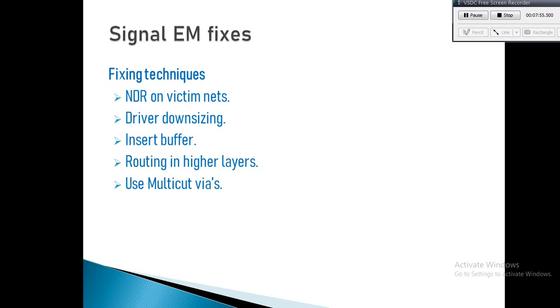Signal EM fixes include manual and automatic fixes. Manual fixes: driver downsizing. Downsizing the driver cell will reduce current density in interconnects and reduce the risk of EM failure. We have to make sure that downsizing the driver is not affecting timing or transition time in that path. We can check timing of the EM affected path before and after downsizing using STA tools like PT or Tempus.